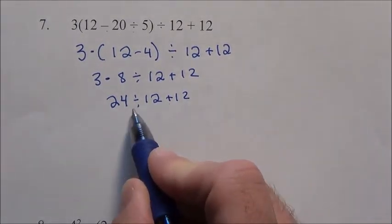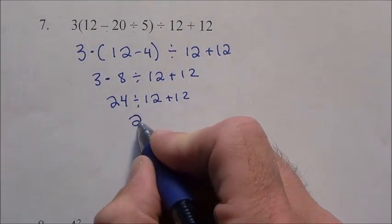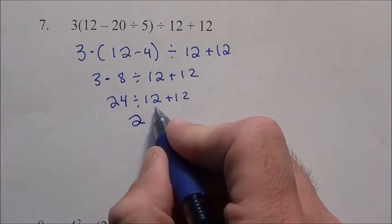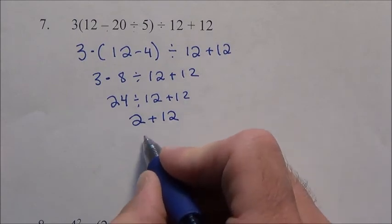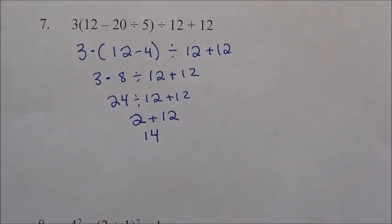Divide or add? Division is more powerful. So that's a 2 because 24 divided by 12 is 2. Plus 12, and then 2 plus 12. Our final answer of 14. There's number 7, simplified.